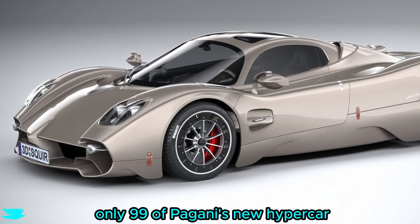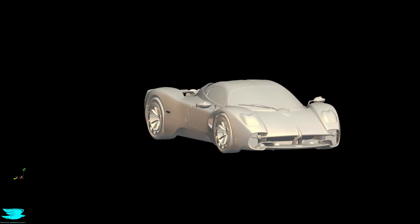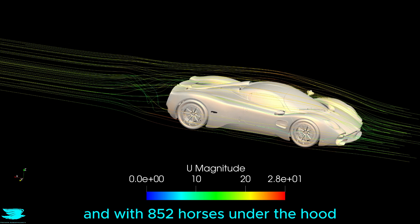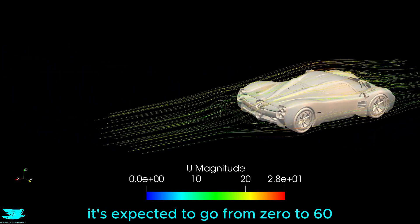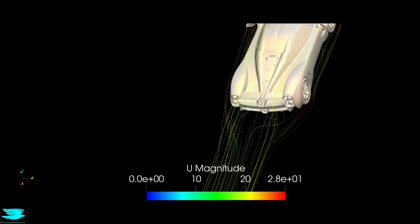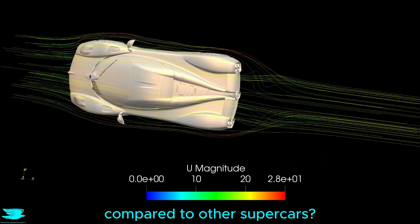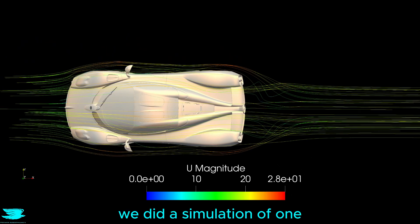Only 99 of Pagani's new hypercar, the Utopia, are being produced, and with 852 horses under the hood, it's expected to go from 0 to 60 in under 3 seconds. But how aerodynamic is it compared to other supercars? To find out, we did a simulation of one.